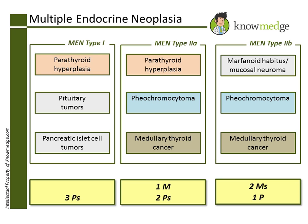Choice C is incorrect. Medullary carcinoma of the thyroid is seen in MEN type IIa and IIb. Choice D is the correct answer. Both MEN type IIa and IIb have adrenal pheochromocytoma associated with them.